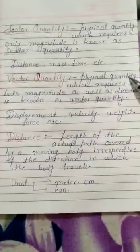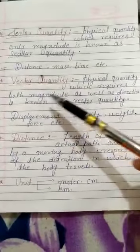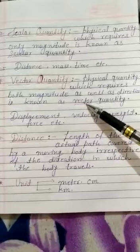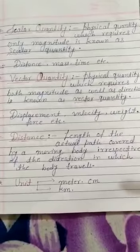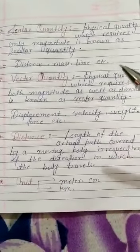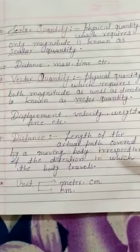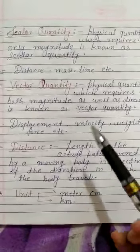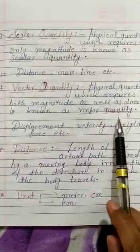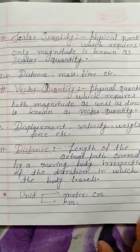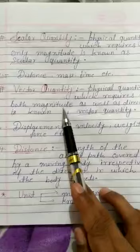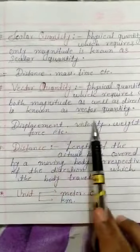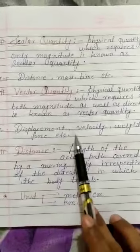Examples of scalar quantity are distance, mass, time, etc. Next, vector quantity — a physical quantity which requires both magnitude as well as direction is known as a vector quantity. Scalar means only magnitude, but in vector, magnitude is there along with direction as well. For example, 5 kilometers towards east — we mentioned a numerical value and also mentioned the direction. Examples of vector quantities are displacement, velocity, weight, force, etc.